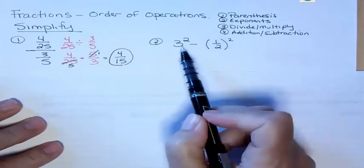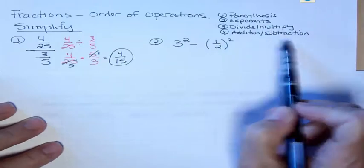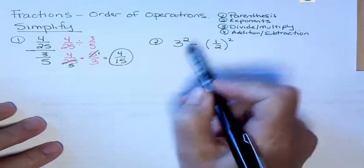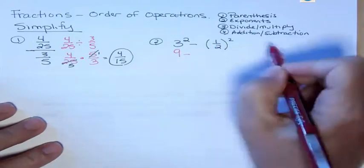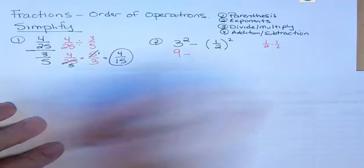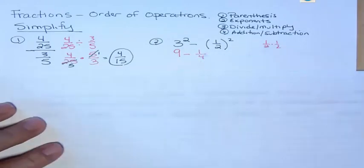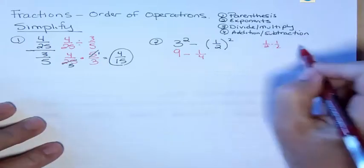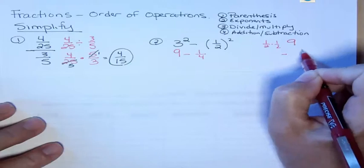Okay, in number 2, we have a subtraction and we have exponents. Definitely exponents are going to happen before subtraction. 3 to the second power I know is 9. And 1/2 to the second power means 1/2 times 1/2. So that's 1 times 1 on the top and 2 times 2 on the bottom. So I have 9 minus 1/4. You can do that horizontally or vertically. Let's do it vertically. 9 minus 1/4.